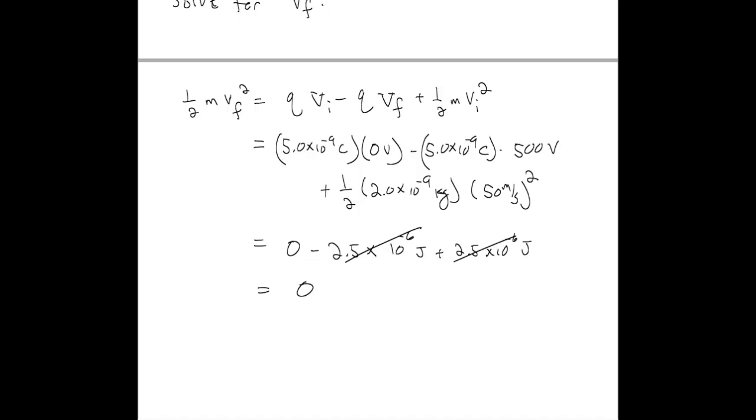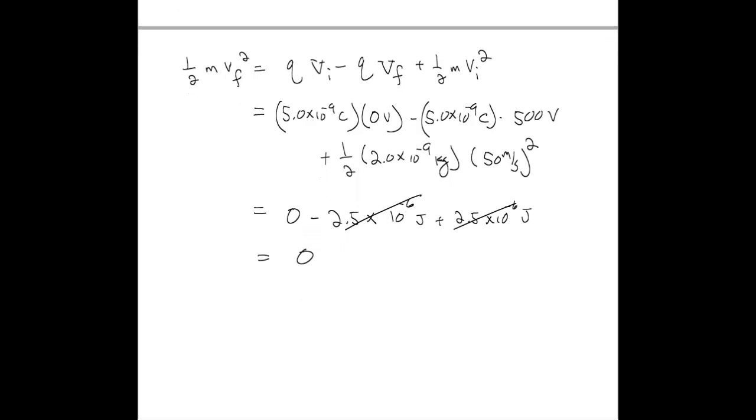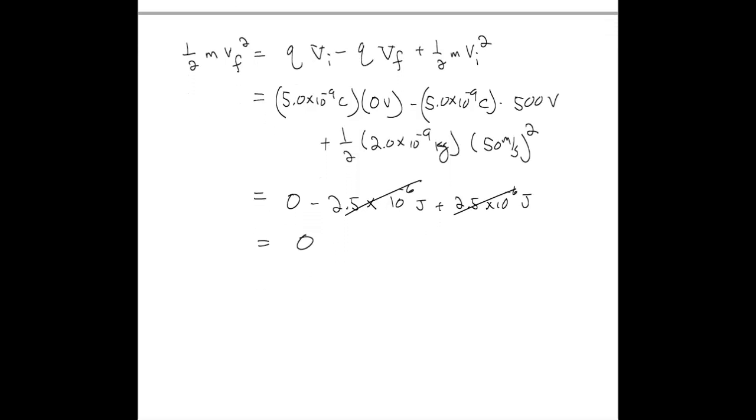We actually get that the potential energy cancels against kinetic energy. So we have one-half mass times the final velocity squared equals zero. Therefore, the final velocity equals zero. The particle actually stops at this position, and that's what we were asked to find.